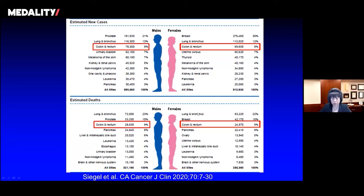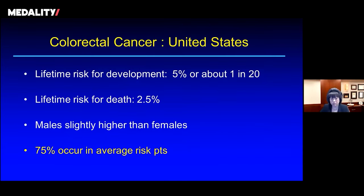When considering men and women together, colorectal cancer accounts for the fourth most common malignancy and represents the second most common cause of cancer deaths. The lifetime risk for developing colorectal cancer is about 5%, representing 1 in 20 individuals, and the lifetime risk for dying from it is about 2.5%, with a slightly higher predominance in men. Particularly important is that the majority — 75% — occur in average-risk patients who have no known risk factors.